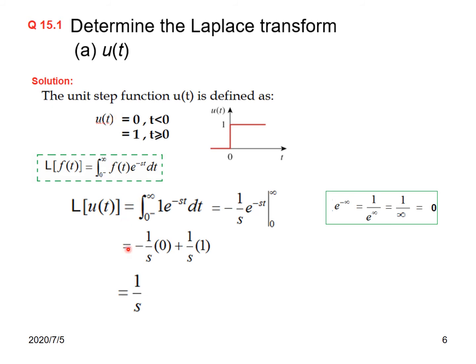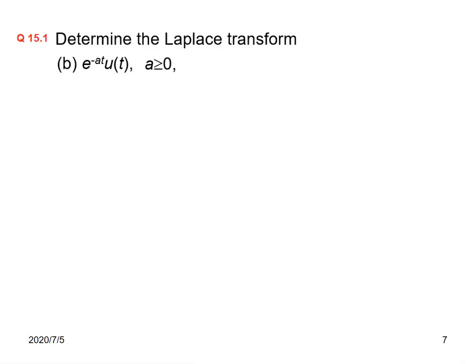These are basics, so subsequently whenever we need the Laplace transform of u(t) we will just write 1 over s. The second example is e raised to the power minus at times u(t), where a is greater than 0, meaning a is positive. Without multiplying by u(t) the function would extend over all time, but multiplying by u(t) makes it zero for t less than 0 and equal to e to the minus at for t greater than or equal to 0.